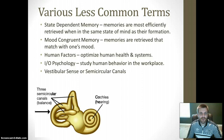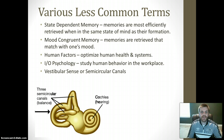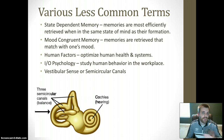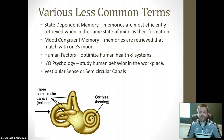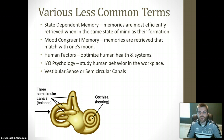Other less common terms include state-dependent memory, mood-congruent memory, human factors, IO psychology, and vestibular sense or semicircular canals. State-dependent memory refers to memories most efficiently retrieved when you are in the same state of mind as when they were formed, often related to people on hallucinogens or alcohol. Mood-congruent memory says your memories are best retrieved when they match your current mood. Human factors is a type of optimization of human health and systems, such as ergonomics — for example, making a keyboard pad to improve efficiency or protect your hands. IO psychology, or industrial-organizational psychology, deals with human behavior in the workplace and HR-related issues.